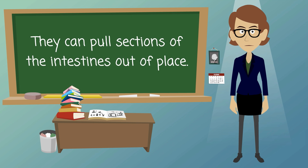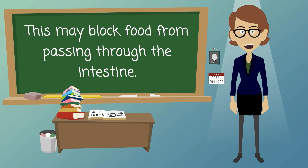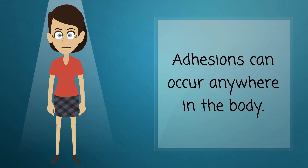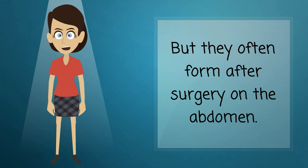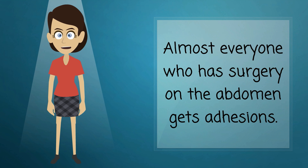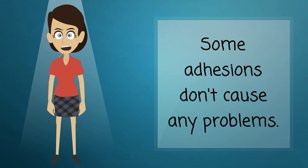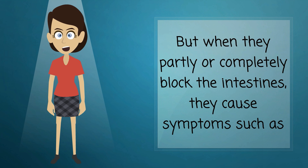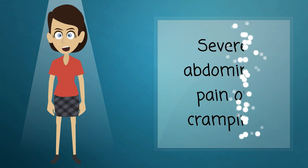Adhesions can pull sections of the intestines out of place, which may block food from passing through the intestine. They can occur anywhere in the body, but they often form after surgery on the abdomen. Almost everyone who has surgery on the abdomen gets adhesions. Some adhesions don't cause any problems.